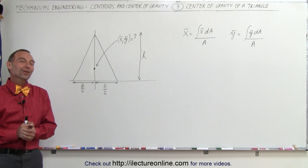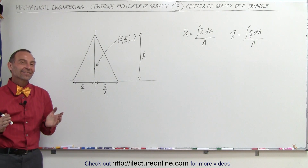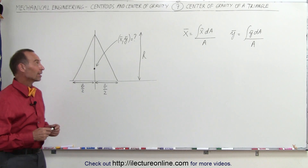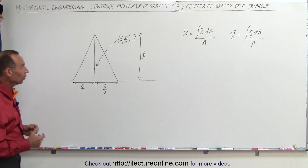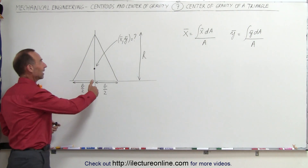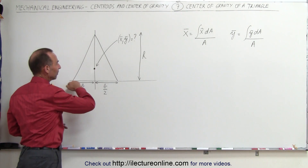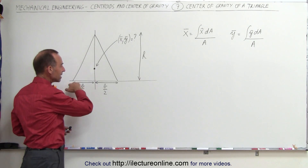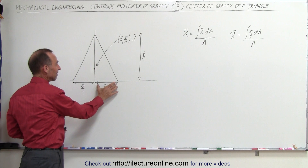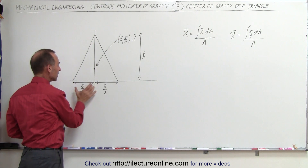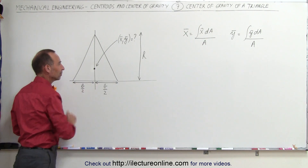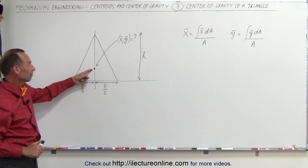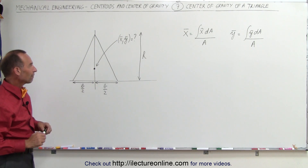Welcome to Electron Line. Now let's find the center of gravity for the triangle. The triangle has height h and the base of length b. We have half base b on each side, and we're trying to find the center of gravity.